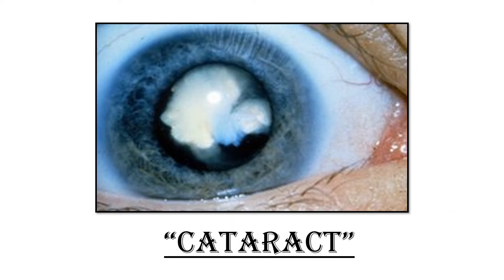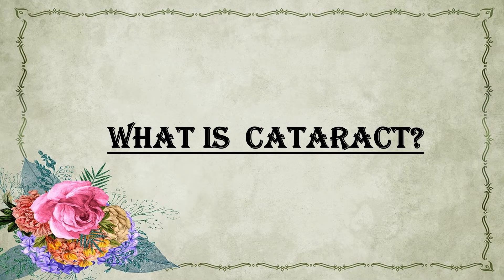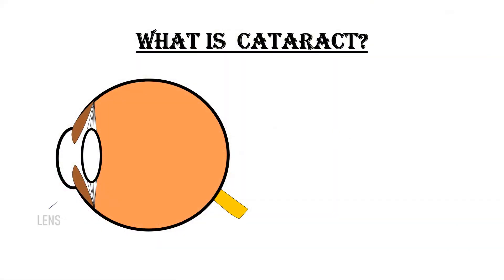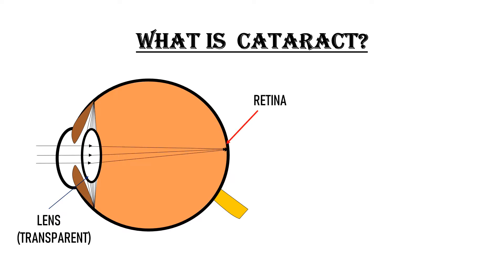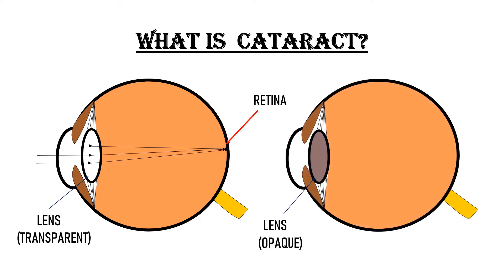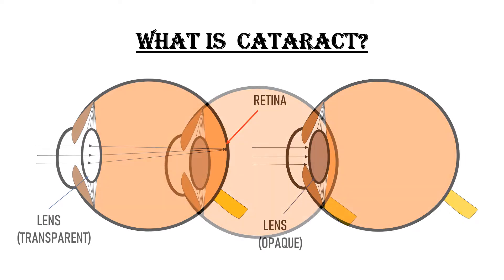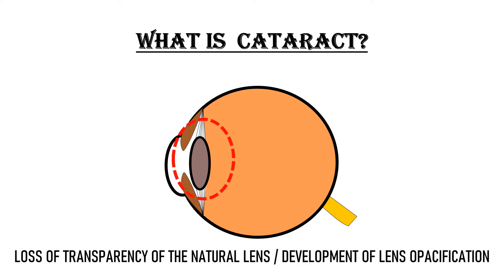The first most obvious question would be: what is cataract? This here is the natural lens which is present inside our eye. This lens is a transparent structure and when light enters our eye, it plays an important role in focusing light rays on our retina — this is how we are able to see. When this lens loses its transparency, these light rays will not be able to reach the retina and vision will be affected. This loss of transparency, or lens opacification, is known as cataract.